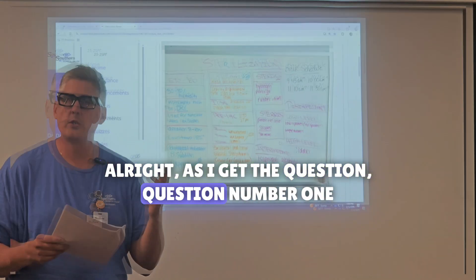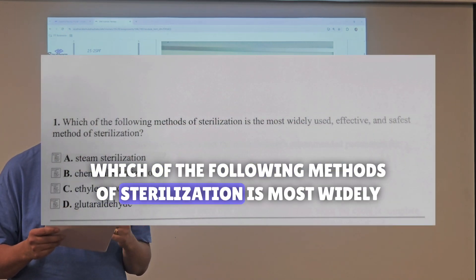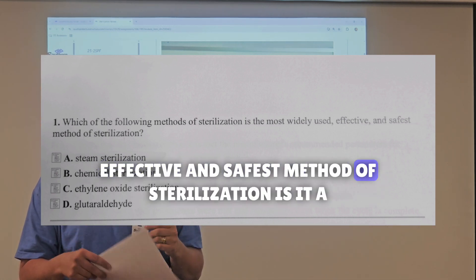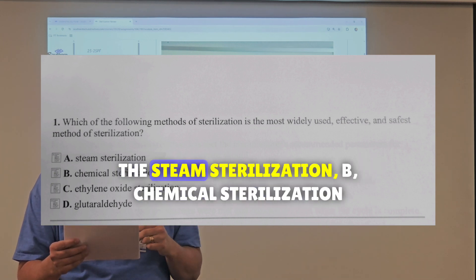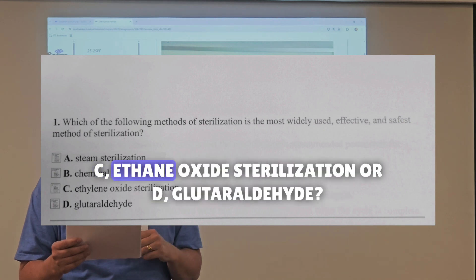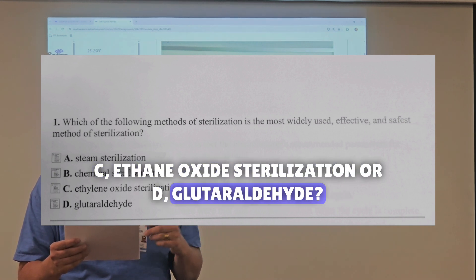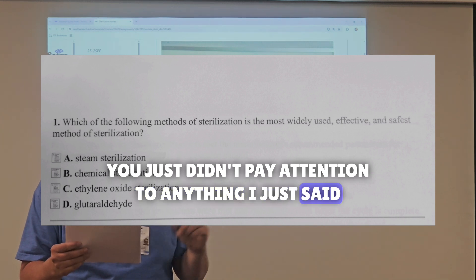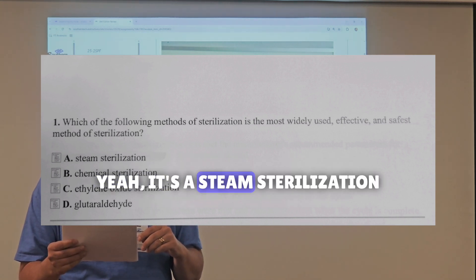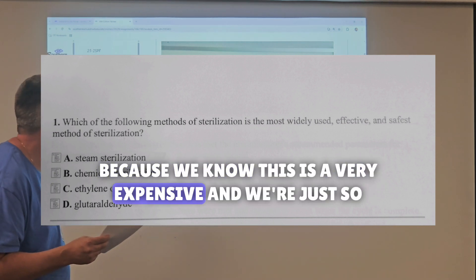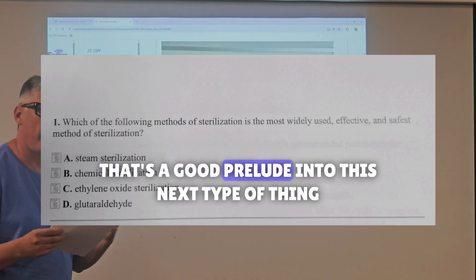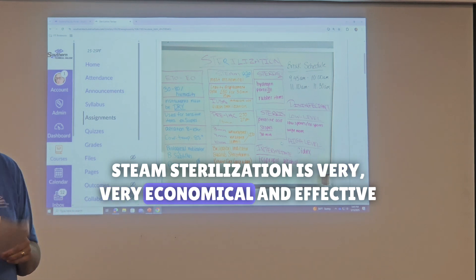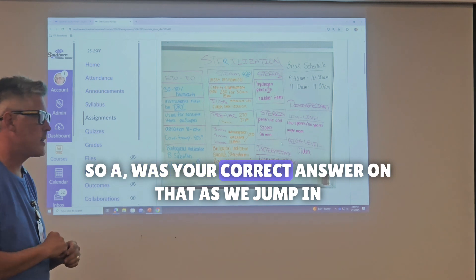Question number one: which of the following methods of sterilization is most widely used, effective, and the safest? A, steam sterilization; B, chemical sterilization; C, ethylene oxide sterilization; or D, glutaraldehyde? The answer is A, steam sterilization. Because we know ETO is very expensive, steam sterilization is very, very economical and effective — it's cheap.